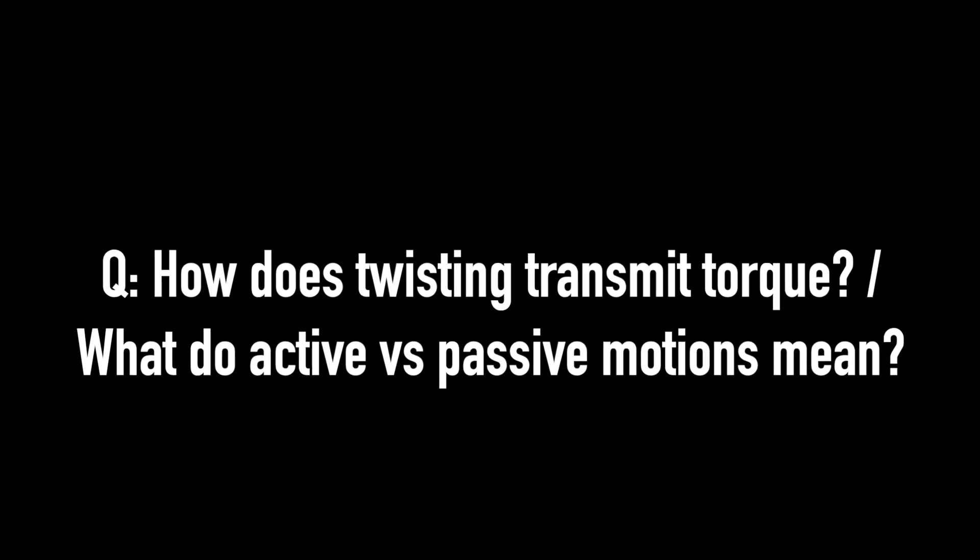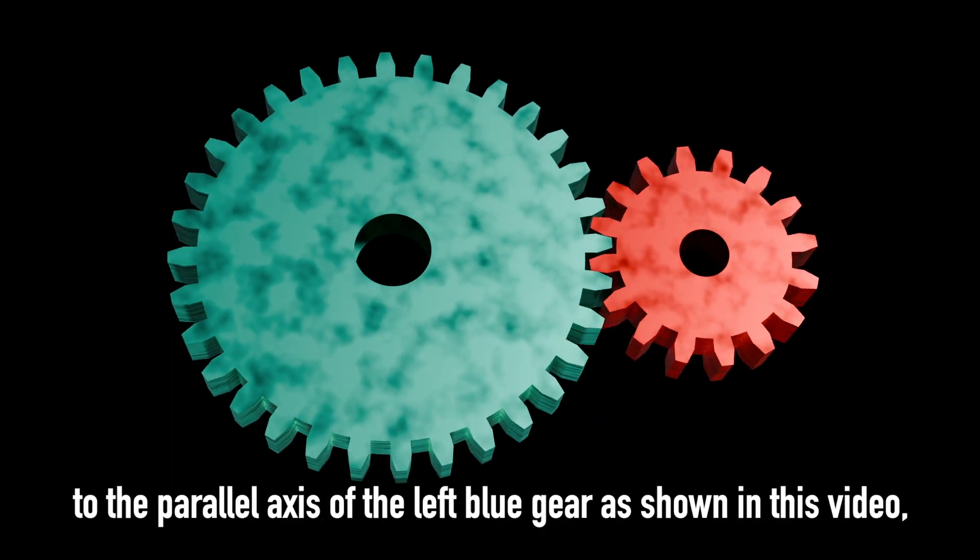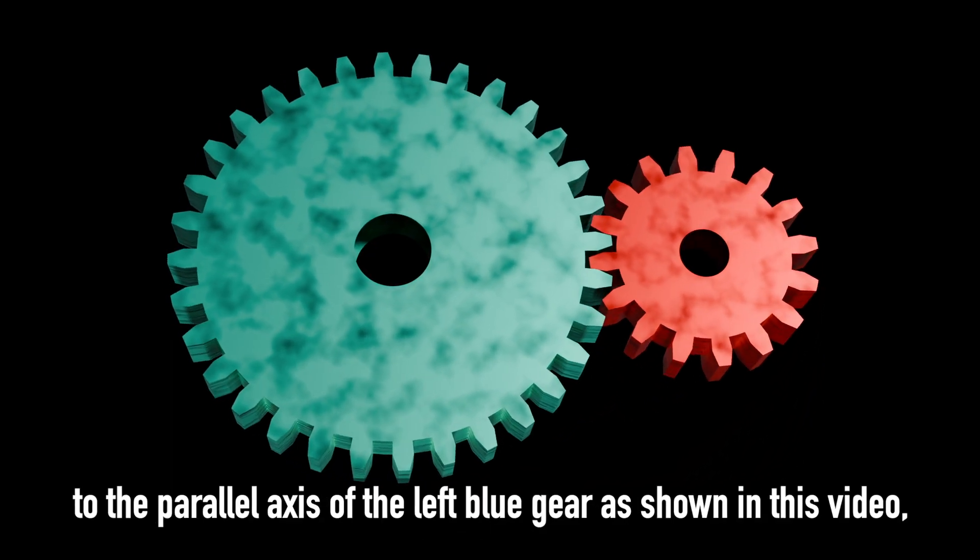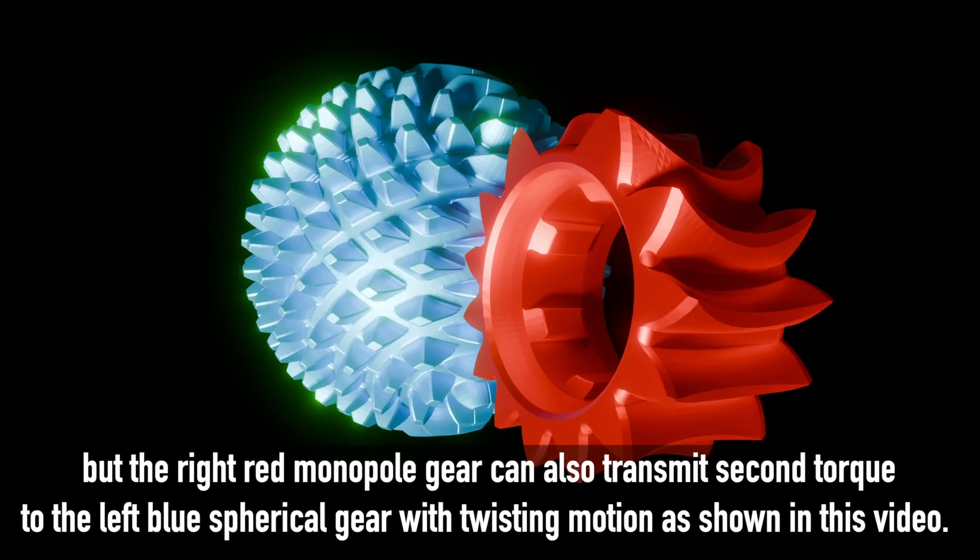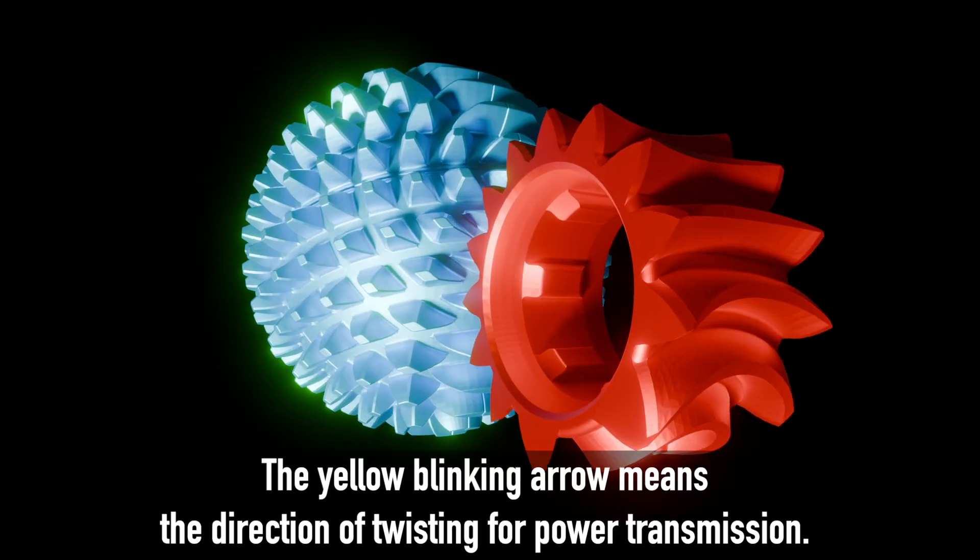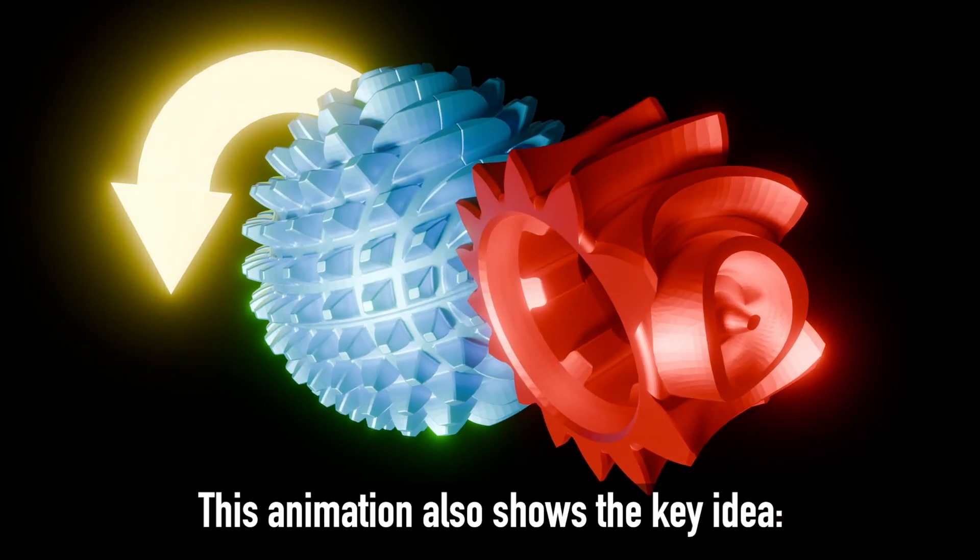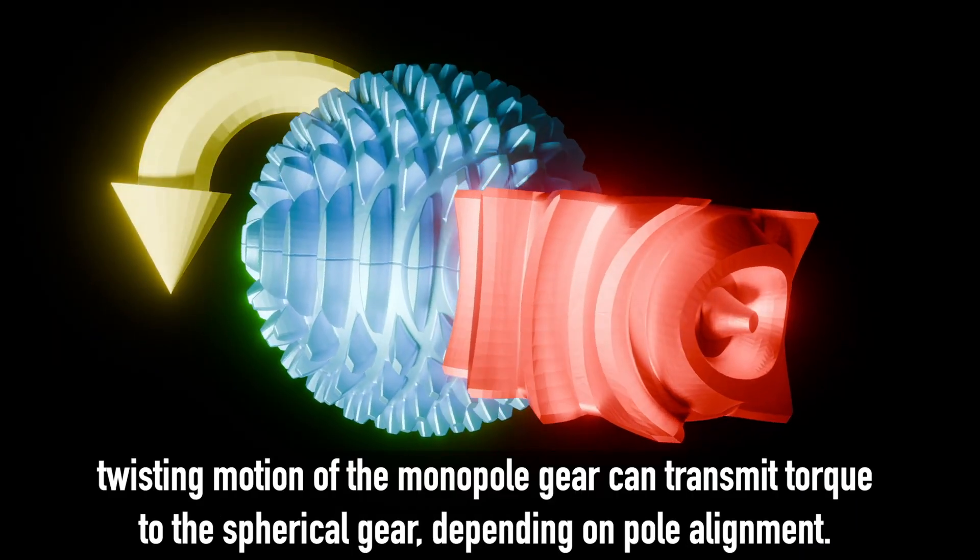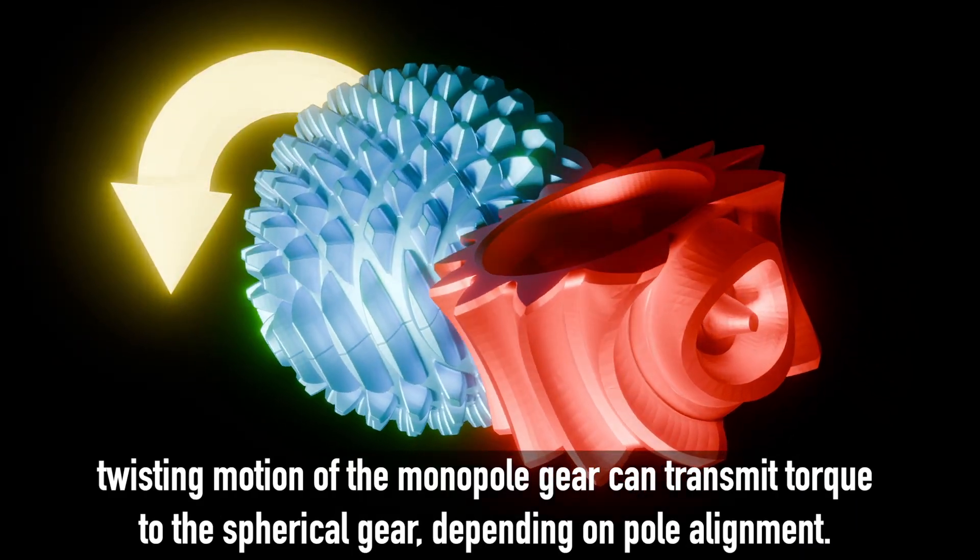How does twisting transmit torque? What do active versus passive motions mean? Conventional right red gear just rotates to transmit torque to the parallel axis of the left blue gear, as shown in this video. But the right red monopole gear can also transmit second torque to the left blue spherical gear with twisting motion, as shown in this video. The yellow blinking arrow means the direction of twisting for power transmission. This animation also shows the key idea. Twisting motion of the monopole gear can transmit torque to the spherical gear, depending on pole alignment.